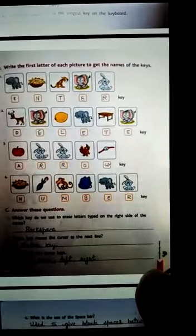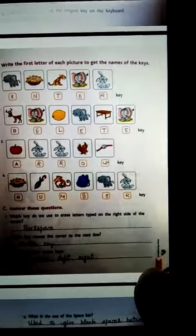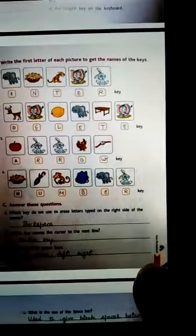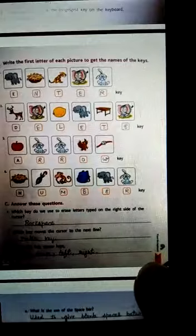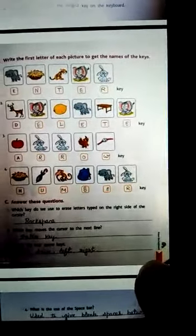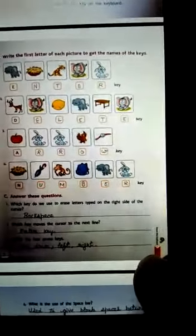E for elephant, N for nest, T for tiger, E for elephant, R for rabbit. D for deer, E for elephant, L for lemon, E for elephant, T for table, E for elephant. N for nest, U for umbrella, M for monkey, B for backhand, E for elephant, and R for rose.